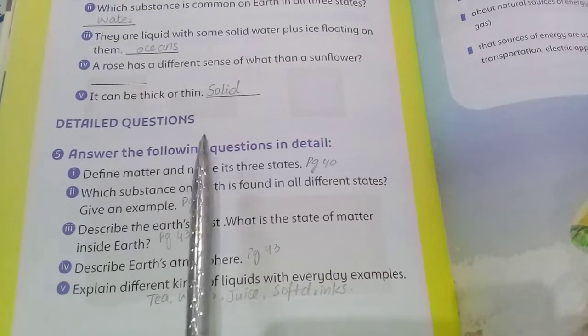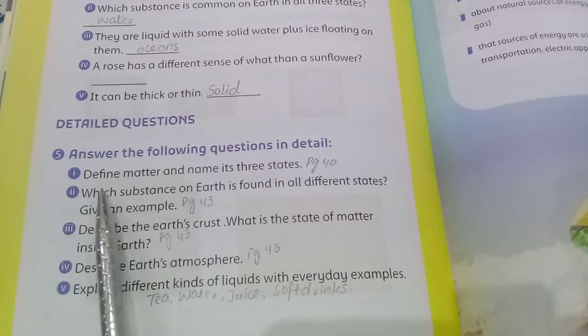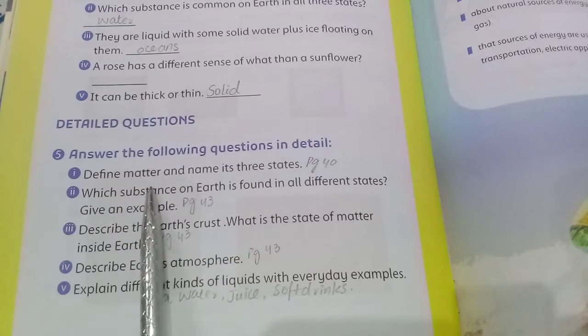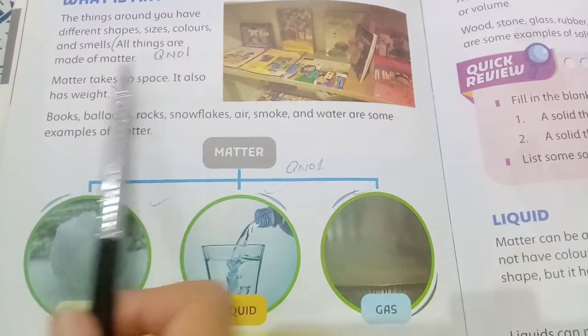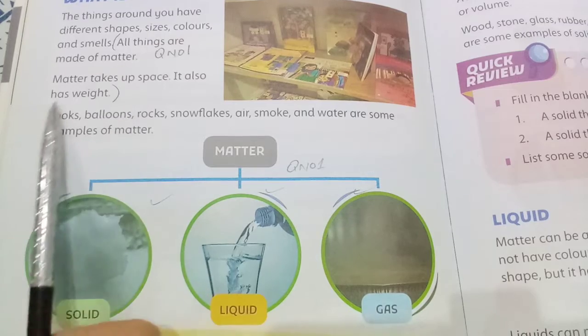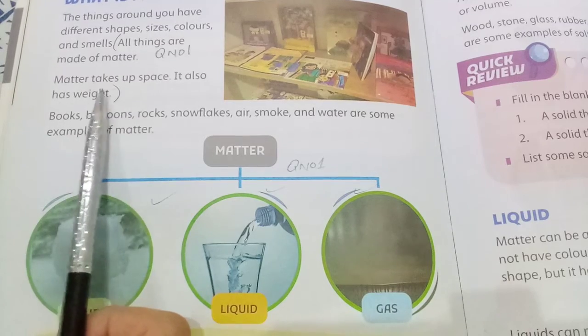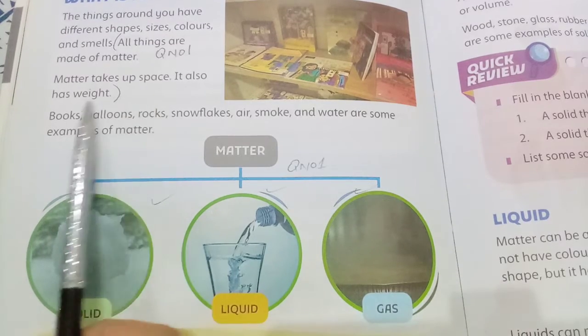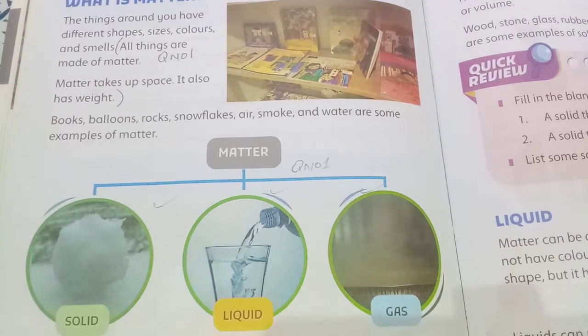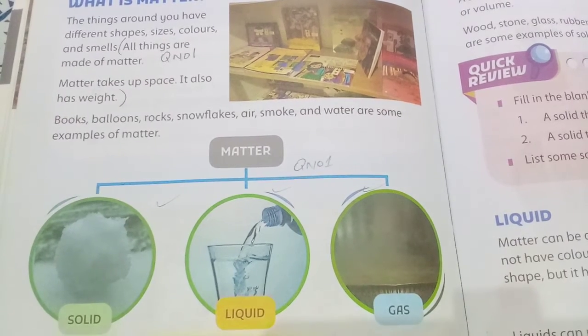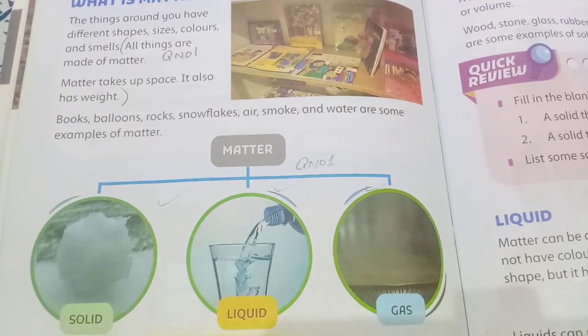Detailed questions. Answer the following questions in detail. Define matter and name its three states. All things are made of matter. Matter takes up space and also has weight. The three states are solid, liquid, and gas.